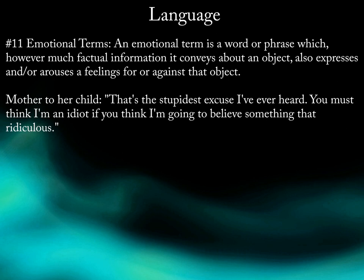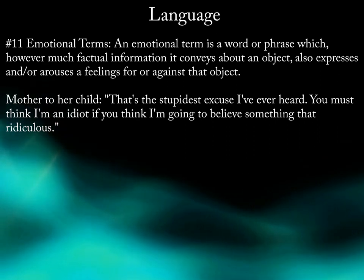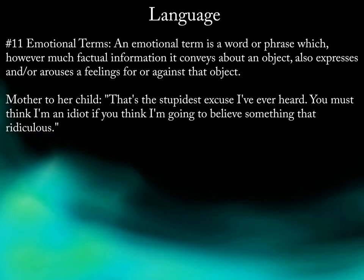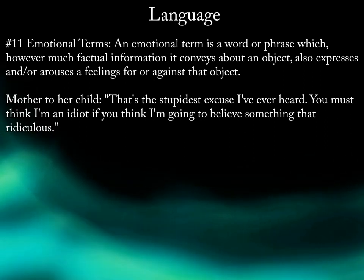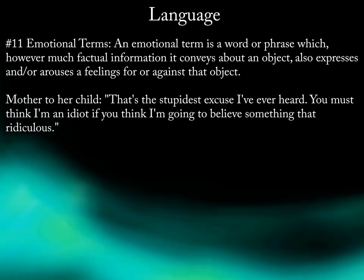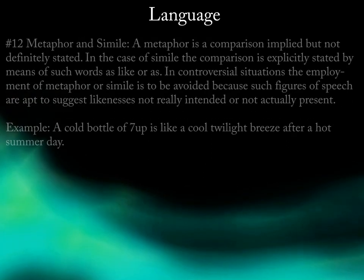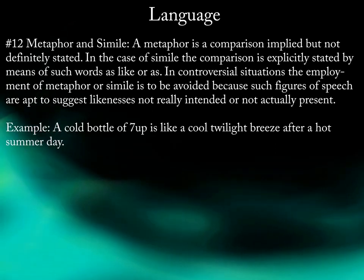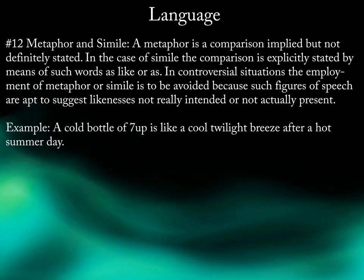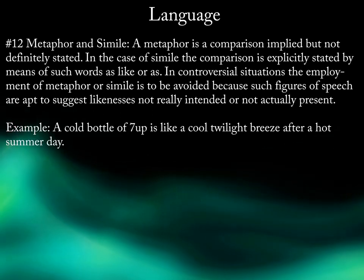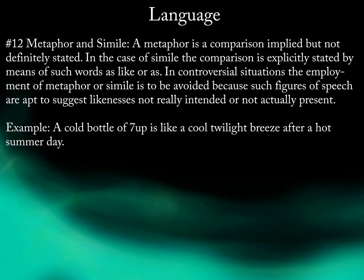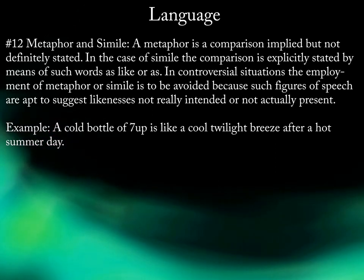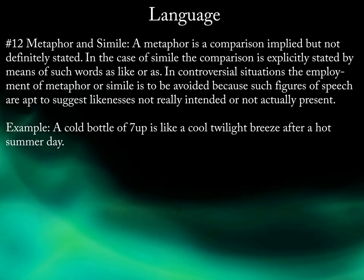11. Emotional Terms. An emotional term is a word or phrase which, however factual information it conveys about an object, also expresses and/or arouses a feeling for or against that object. Example: Mother to her child — "That's the stupidest excuse I've ever heard. You must think I'm an idiot if you think I'm going to believe something that ridiculous." 12. Metaphor and Simile. A metaphor is a comparison implied but not definitively stated. In the case of simile, the comparison is explicitly stated by means of such words as "like" or "as." In controversial situations, the employment of metaphor and simile is to be avoided because such figures of speech are apt to suggest likeness not really intended or not actually present. Example: "A cold bottle of 7-Up is like a cool twilight breeze after a hot summer day."